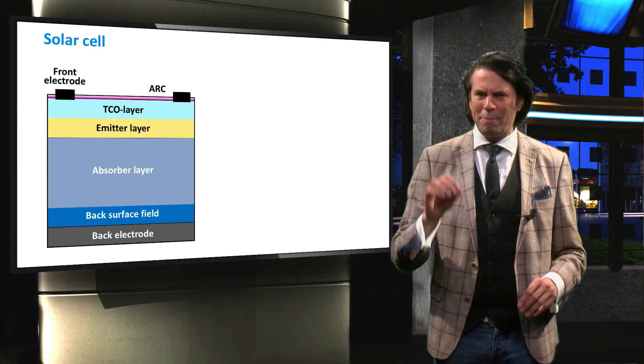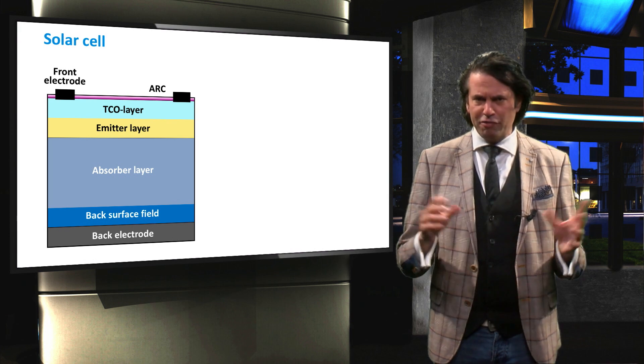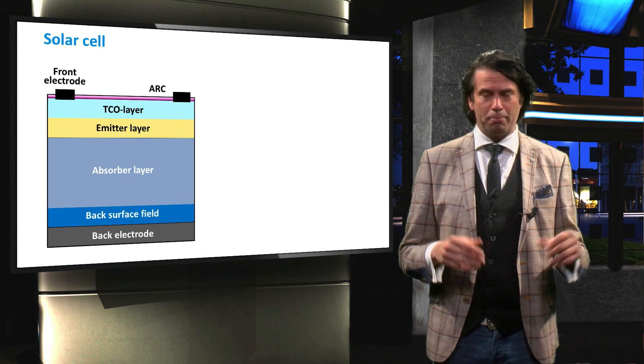We will base this solar cell on a P-type silicon absorber, even though some silicon cells can be made with an N-type absorber layer.